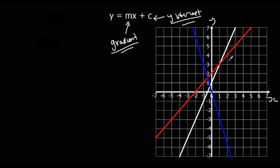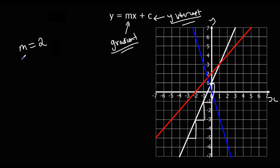Let's start with the white line. The gradient: every one it goes across, it's going up two spaces. So the white line has got a gradient of two. And its y-intercept — where it crosses the y-axis — is at one, so c is one. For the white line: y equals two x plus one. That's the equation of the white line.